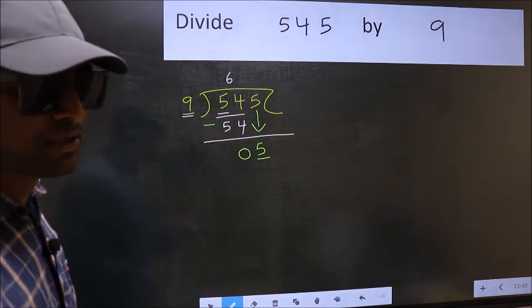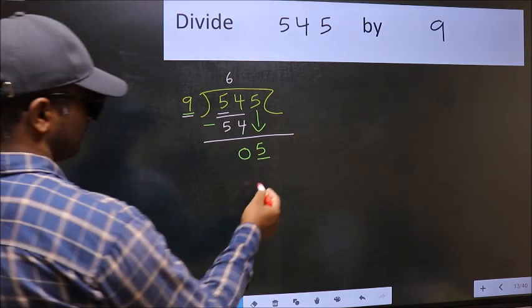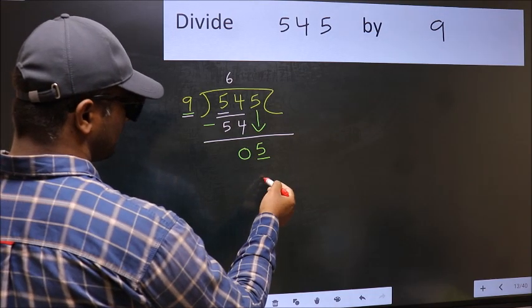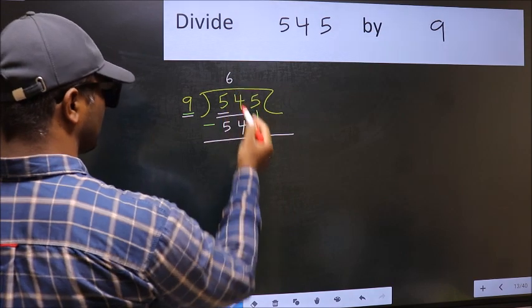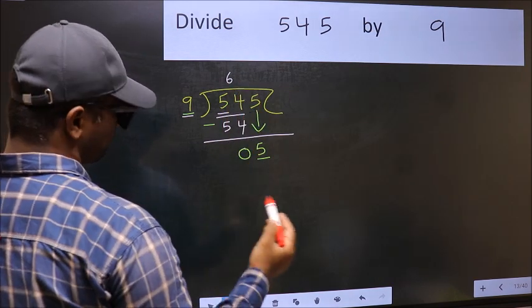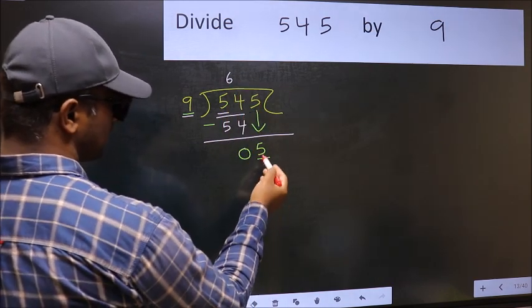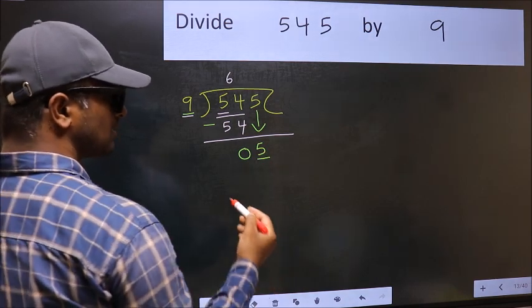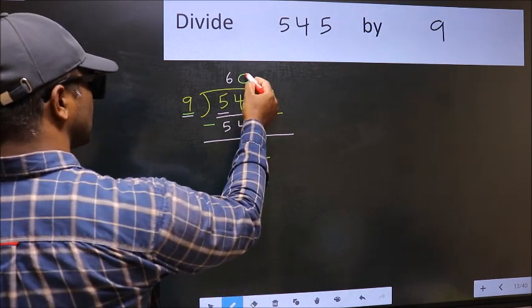Instead, what you should think of doing is which number should we take here. If I take 1, we will get 9. But 9 is larger than 5. So what we should do is we should take 0.